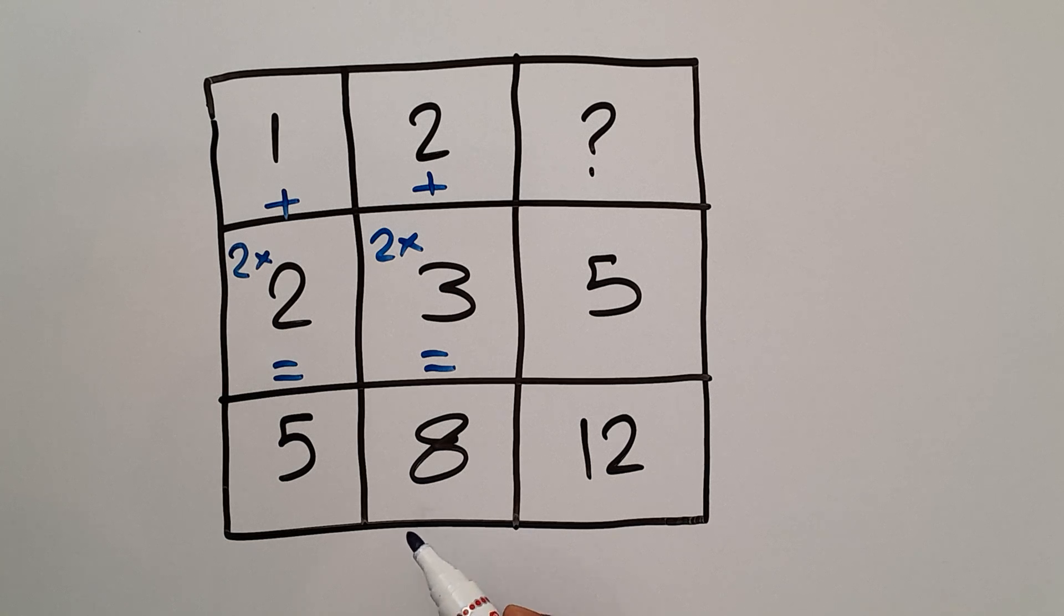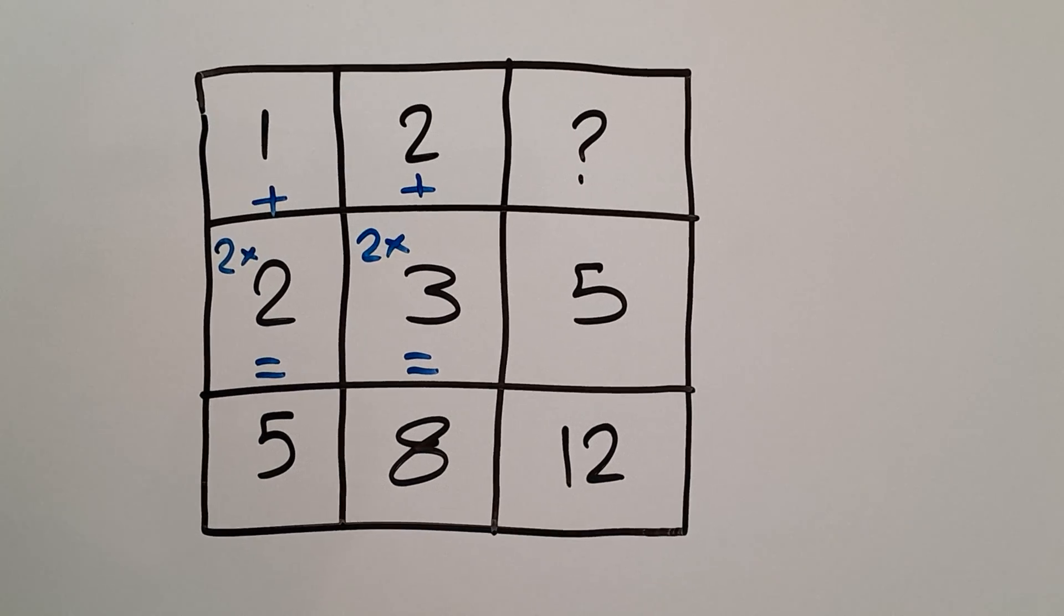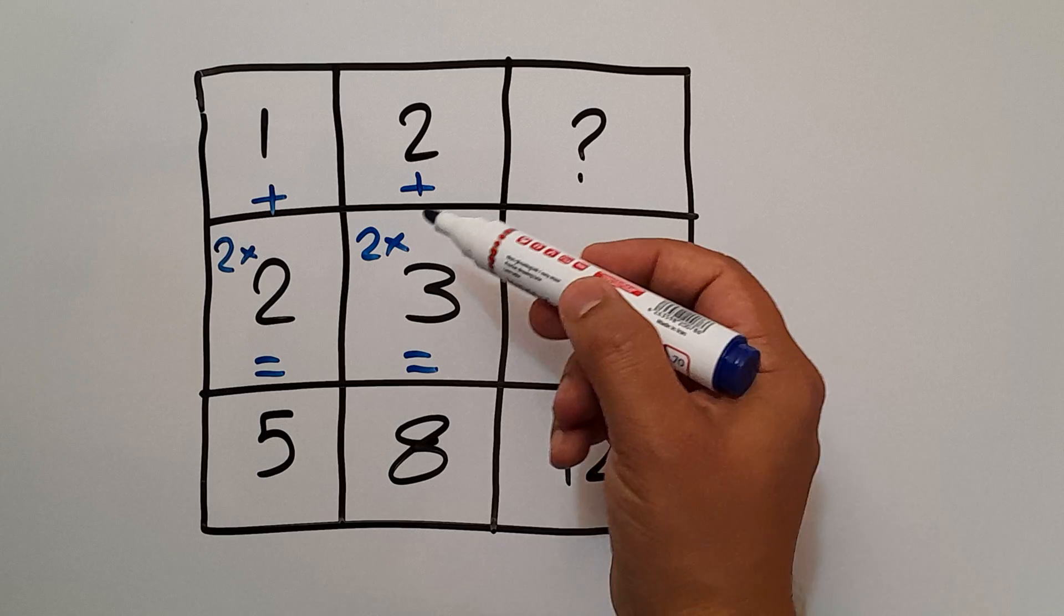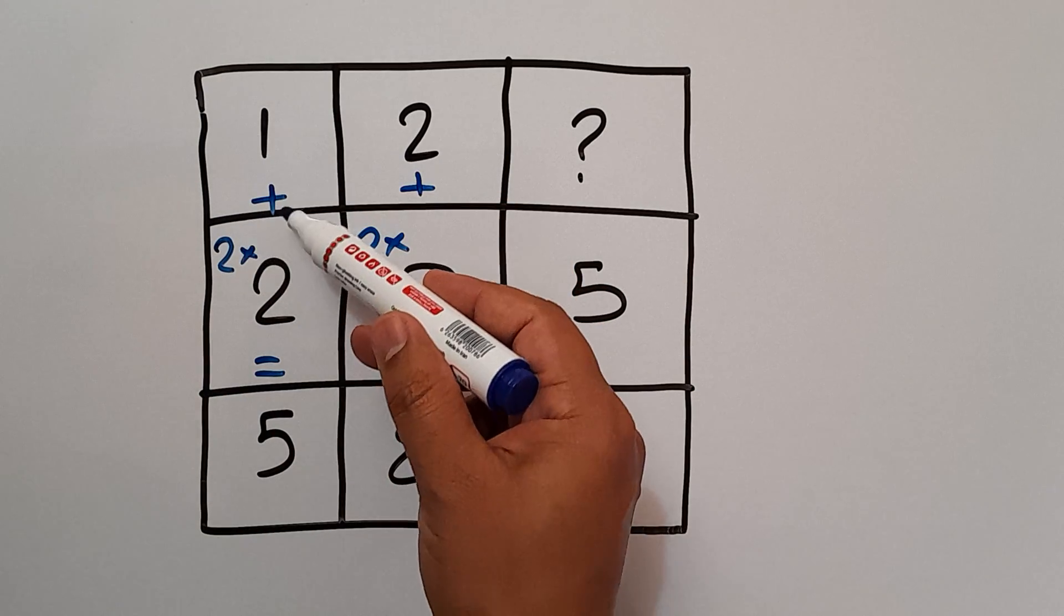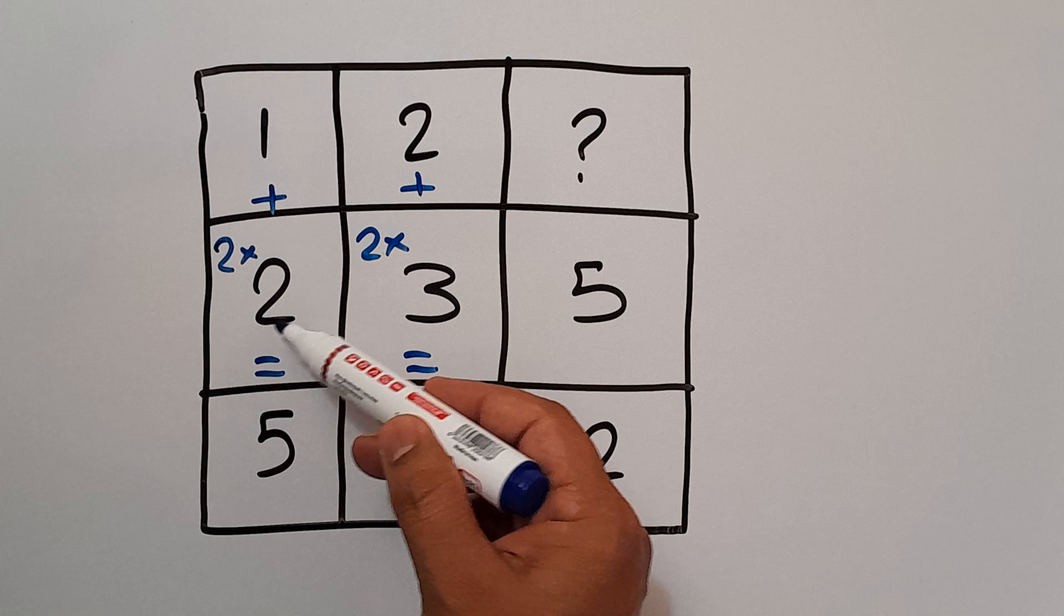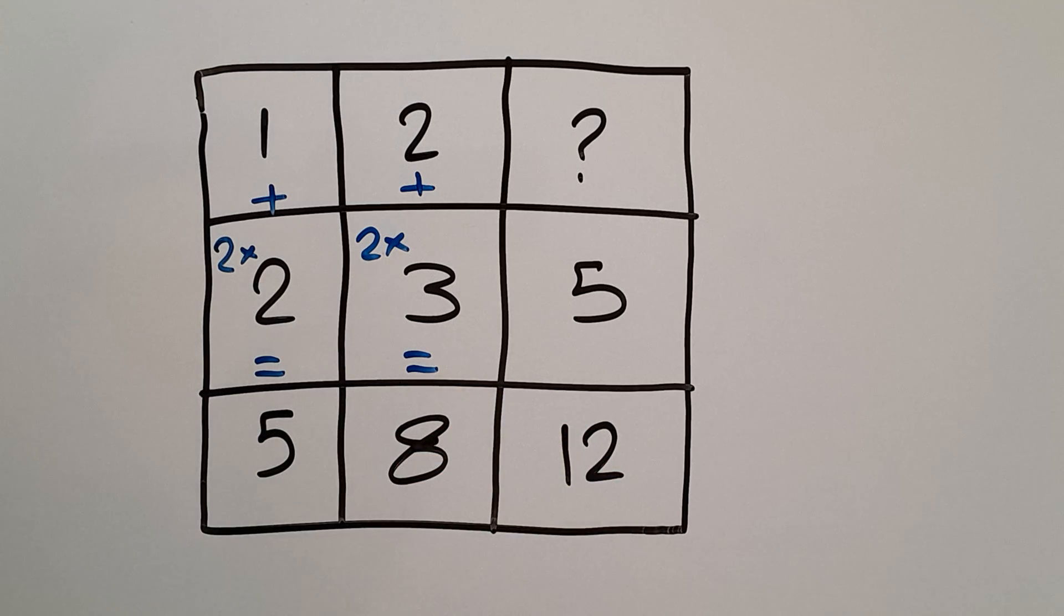So therefore, the pattern that exists here: the first number of each column plus 2 times the second number gives us the third number.